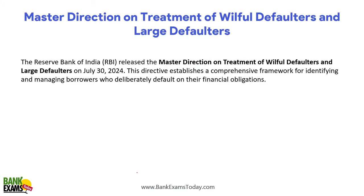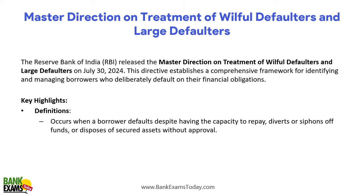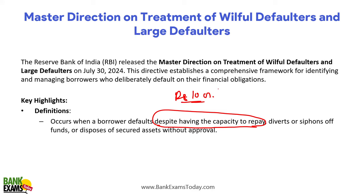So who is a willful defaulter? A willful defaulter is a person who has the capacity to repay his debts but is not doing it. A borrower who defaults despite having the capacity to repay — the borrower is diverting or siphoning off the funds. For example, a borrower took a loan of 10 crore rupees but instead of repaying, he bought gold with that money and is now NPA. So he is a willful defaulter.